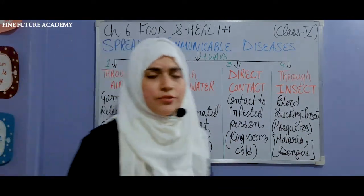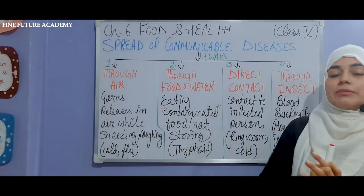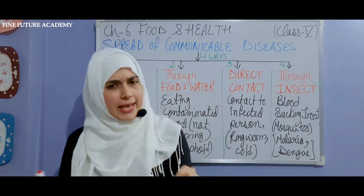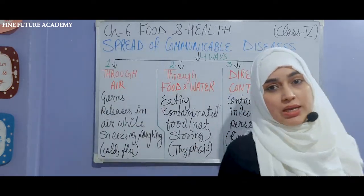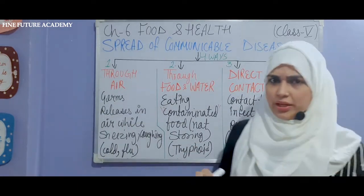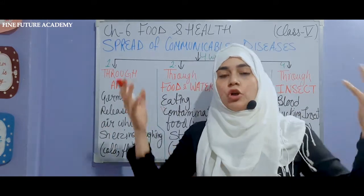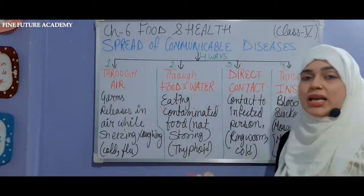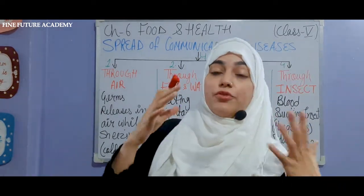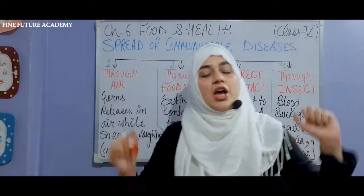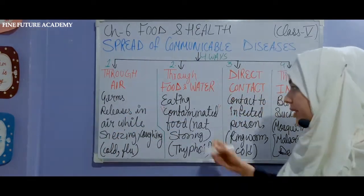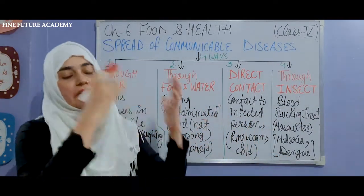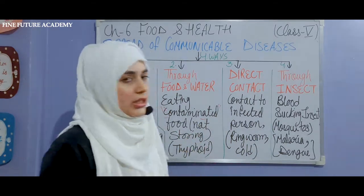The second way is through food and water. If you eat street food outside and your food is not covered, little insects like flies can infect the food. When you eat that infected food, you can get diseases like stomach ache and food poisoning. Contaminated — meaning dirty — water and contaminated food, such as street food, are common causes.